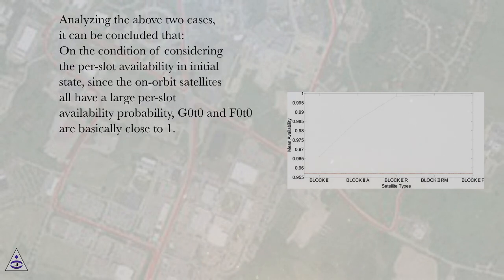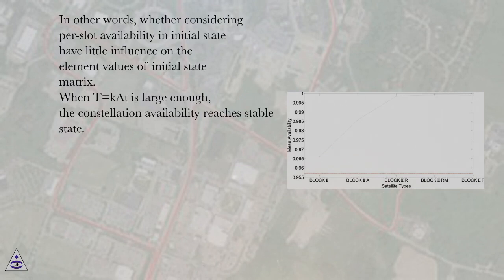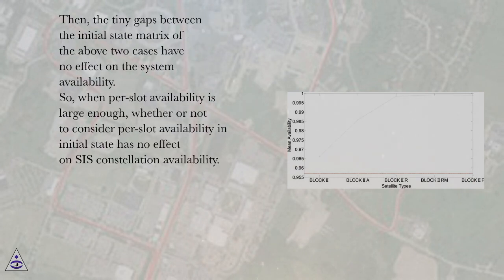Analyzing the above two cases, it can be concluded that on the condition of considering the per-slot availability in initial state, since the on-orbit satellites all have a large per-slot availability probability, G0T0 and F0T0 are basically close to 1. In other words, whether or not to consider per-slot availability in the initial state has little influence on the element values of the initial state matrix. When T equals K delta T is large enough, the constellation availability reaches stable state, and the tiny gaps between the initial state matrices of the two cases have no effect on system availability.